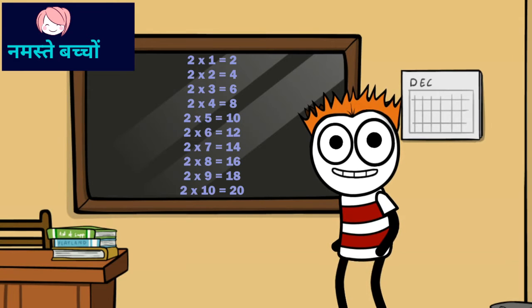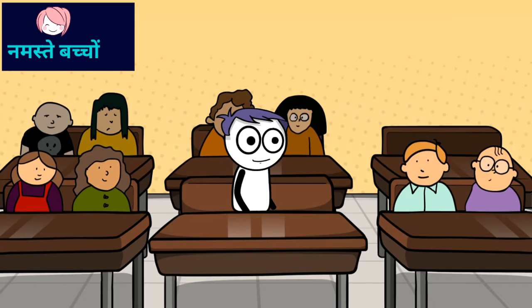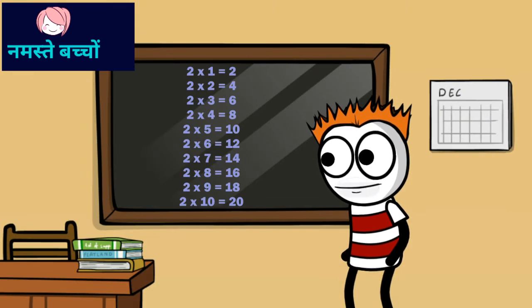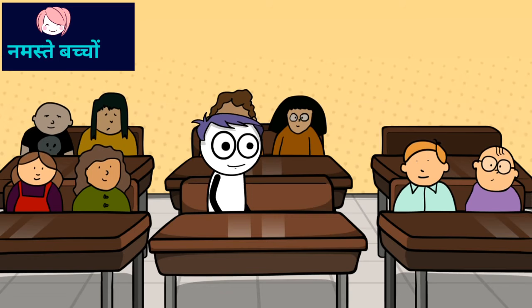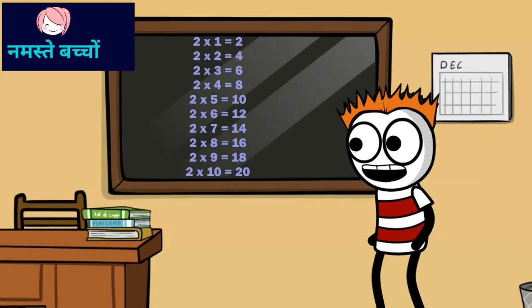2 sixes are 12. 2 sixes are 12. 2 sevens are 14.